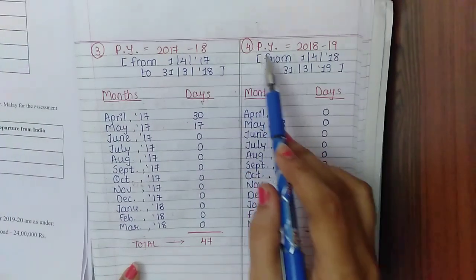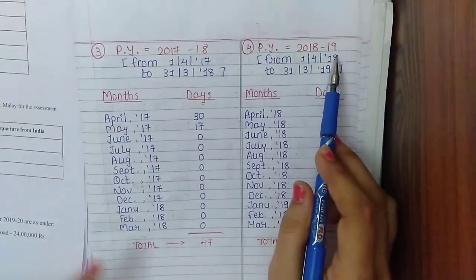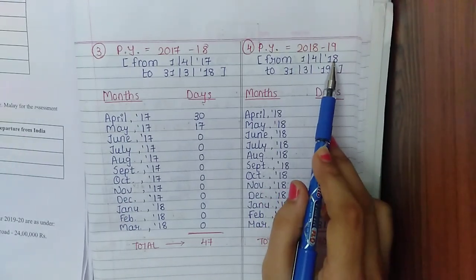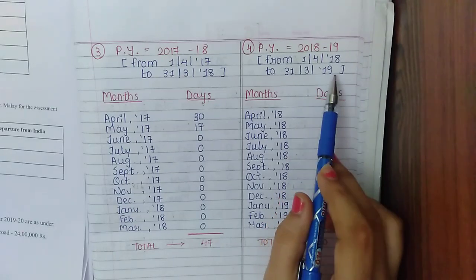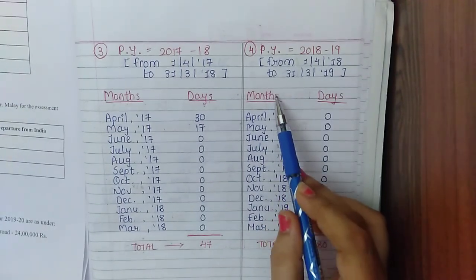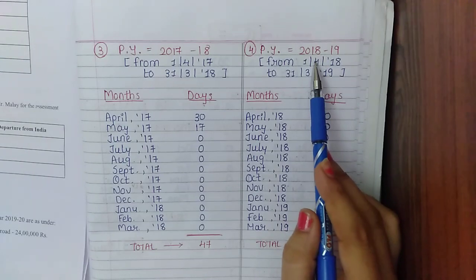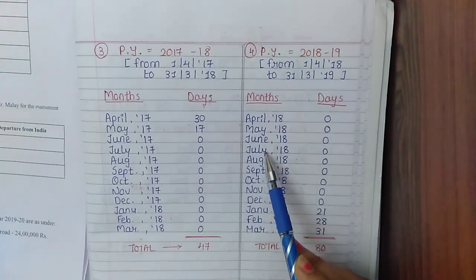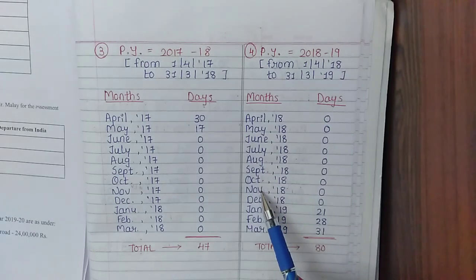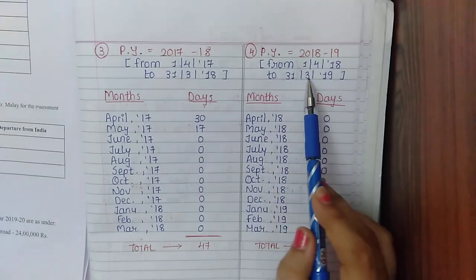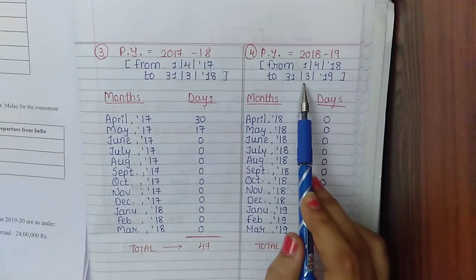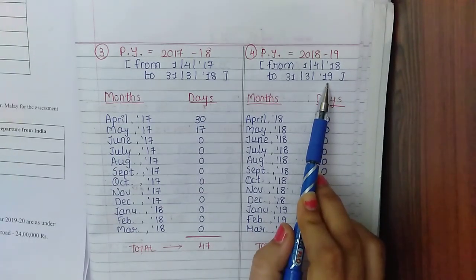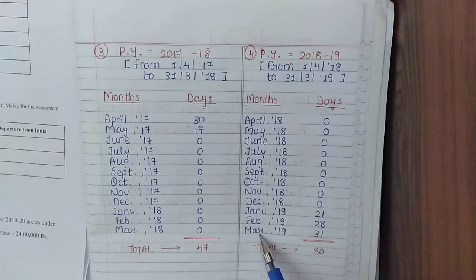Fourth previous year 2018-19 runs from 1st April 2018 to 31st March 2019. List all 12 months. He arrived on 11th January 2019, so April through December 2018 all get 0 days. For January 2019, total 31 days minus first 10 days (1st to 10th) = 21 days.